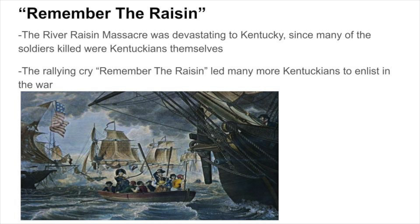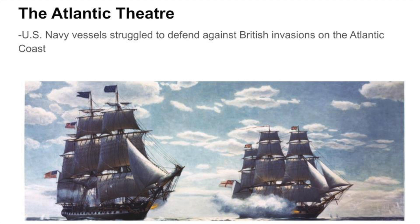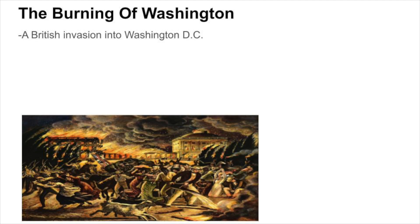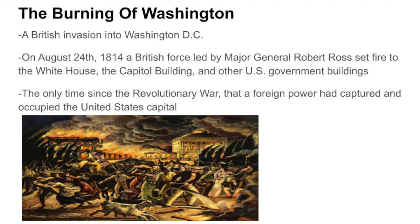The Atlantic Theater was another main arena in the War of 1812. U.S. Navy vessels struggled to defend against British invasions onto the Atlantic coast. The biggest failure in the Atlantic Theater was the burning of Washington. The burning of Washington was a British invasion into Washington, D.C., the capital city of the United States. On August 24, 1814, after defeating American forces at the Battle of Bladensburg, a British force led by Major General Robert Ross set fire to the White House, the Capitol Building, and other U.S. government buildings. The burning of Washington marks the only time since the Revolutionary War that a foreign power had captured and occupied the United States Capitol.